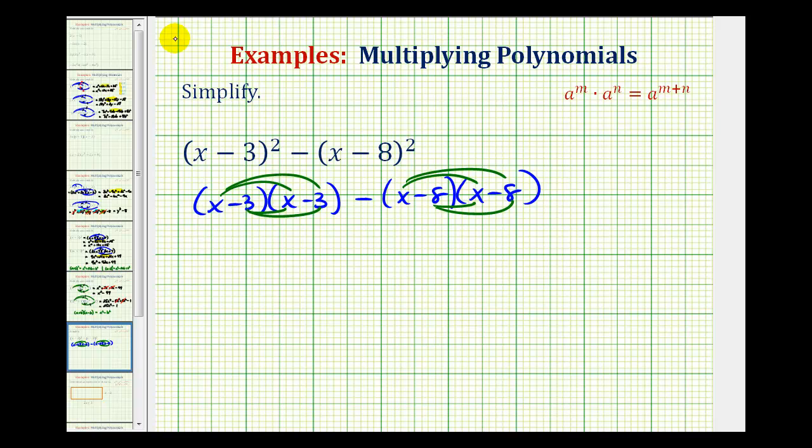So to keep this organized, let's put this product in a set of brackets. So we'll have x times x, that's x squared. Then we're going to have x times negative three, that's going to be minus three x. And then we'll have negative three times x, that's another minus three x. Then we'll have negative three times negative three, that's going to be plus nine.